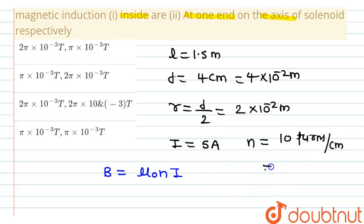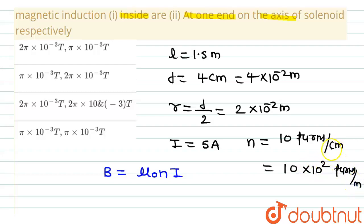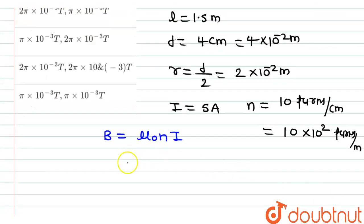10 turns per centimeter will be equal to 10 × 10² turns per meter, because centi stands for 10⁻², and it becomes 10² in the numerator, giving n = 10³ turns per meter. Now putting the values in the formula: